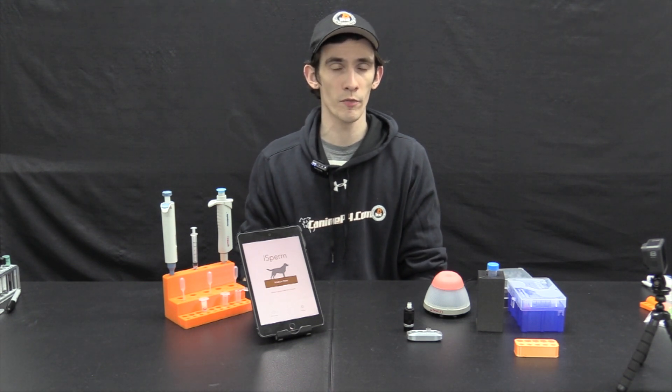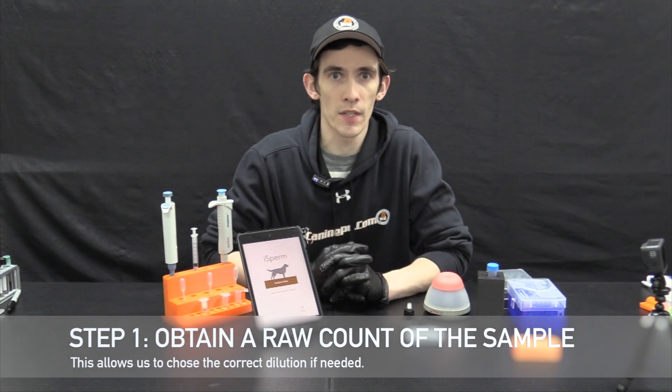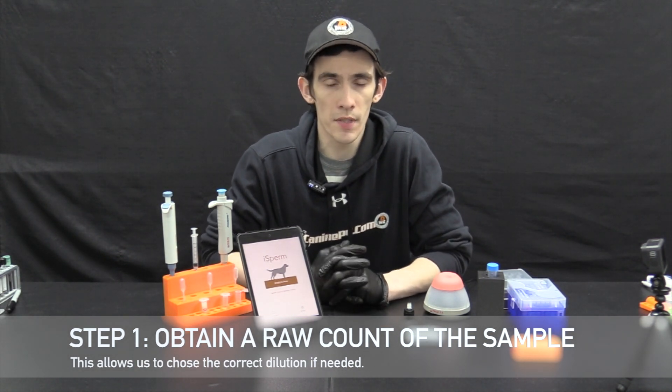When you have a raw sample, often the sperms are very crowded, sometimes even when already extended but certainly when they're raw, and this can be hard for both the naked eye and the camera to distinguish the movements of the sperms. The standard procedure we recommend here at K9P4 is to first get a raw count of the semen in question.